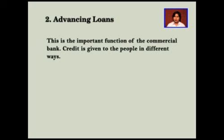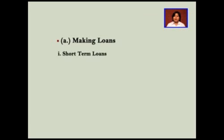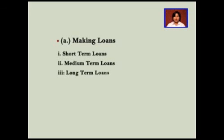The second and another important function of the bank is advancing loans. Normally, the bank gives three types of loans. Number one, the short period loan — these loans are for a period of six months to one year and attract high interest rates. Second is the medium term loan, which normally ranges from one year to five years. And the third type is the long period loan, normally ranging for more than ten years.